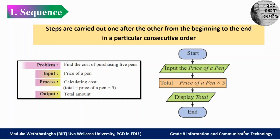Let's identify a problem that uses the sequence control structure. The problem is to find the cost of purchasing five pens. You go to a shop to purchase five pens. First, we have to identify input, process, and output. The input we need is the price of one pen — we already know we need five pens. So the input is: price of one pen.